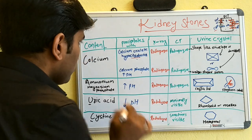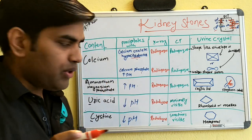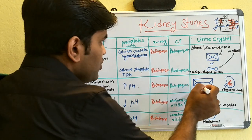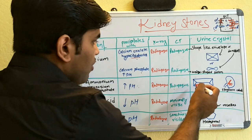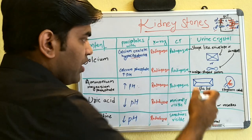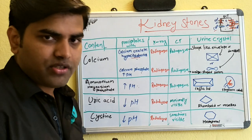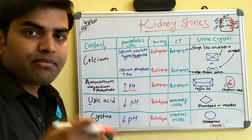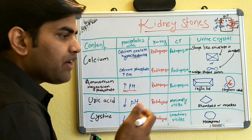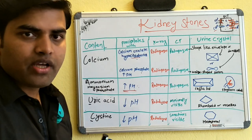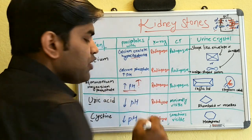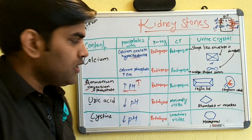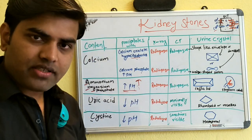Ammonium magnesium phosphate stones occur in patients with high pH — that is, alkaline urine. These stones are radio-opaque on X-ray and CT scan. The urine crystals resemble a coffin lid shape. This increased pH is due to urinary tract infection with urease-producing organisms. These organisms hydrolyze urea to produce ammonium compounds, which are basic in nature, increasing urine pH, and in this alkaline urine, ammonium magnesium phosphate stones form.